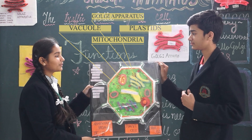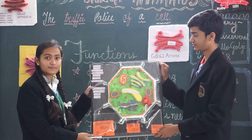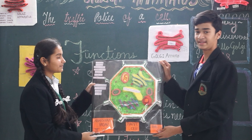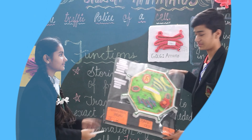Hey Vidachi, look what I found yesterday. What is it? It is the model of a plant cell. Show me. It looks so beautiful. But what are these structures inside it? This is the vacuole. This is the cell wall. This is mitochondria. This is Golgi apparatus.